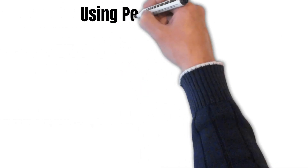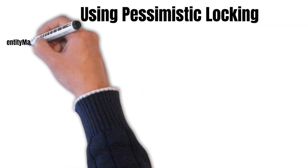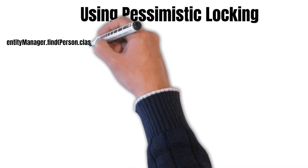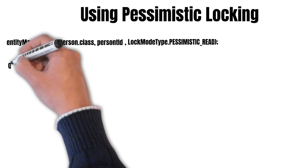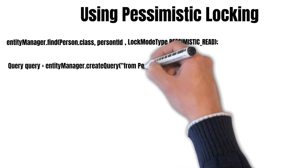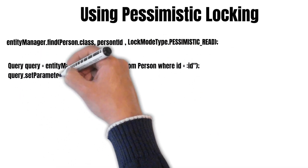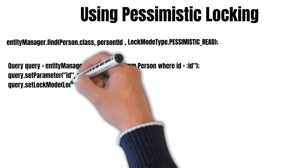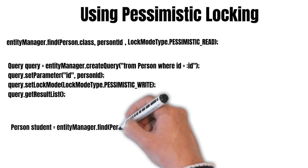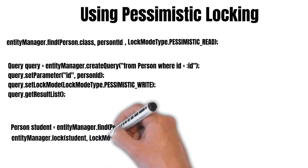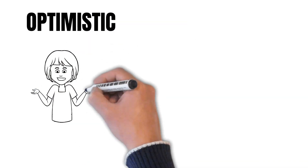Here are a few examples of how to use pessimistic locking. Using EntityManager.find to find a person by person ID, we can pass the lock mode as PESSIMISTIC_READ. When creating a query to select a person by person ID and passing the ID as a parameter, we can pass the lock mode as PESSIMISTIC_WRITE to get the results. After reading the entity using EntityManager, we can also set the lock mode as PESSIMISTIC_FORCE_INCREMENT. In summary, optimistic locking operates at the application level, while pessimistic locking operates at the database level.